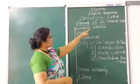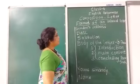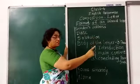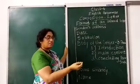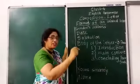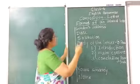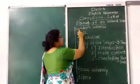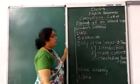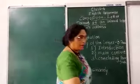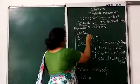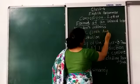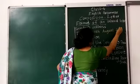Next is the format of an informal letter. First, you have to write the sender's address. Sender's address means your own address — if you are writing the letter, you write your address. Next comes the date. You have to leave one line between the sender's address and the date. For example, 20 August 2020.